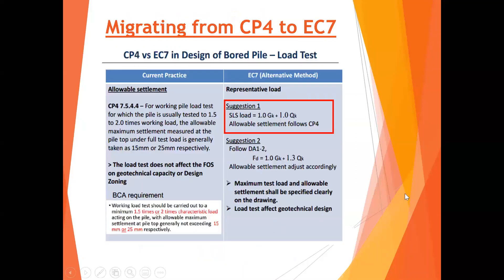Now talking about settlement — why is settlement important? All high-rise buildings will have some settlement, and we cannot control all piles to settle the same amount, so differential settlement is the main concern. Based on extensive data worldwide, as long as your pile does not settle more than 15 mm under 1.5 times the working load (now called the characteristic load) under the current requirement, the building is unlikely to suffer from differential settlement.